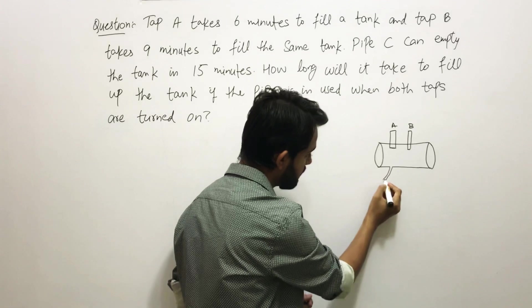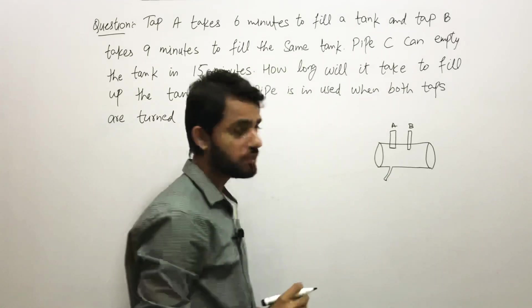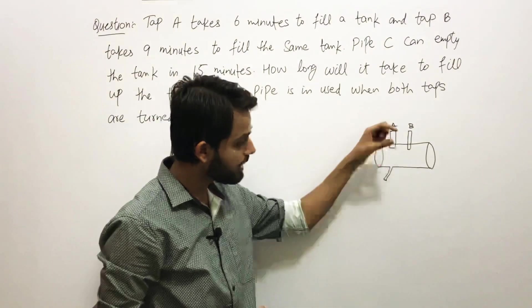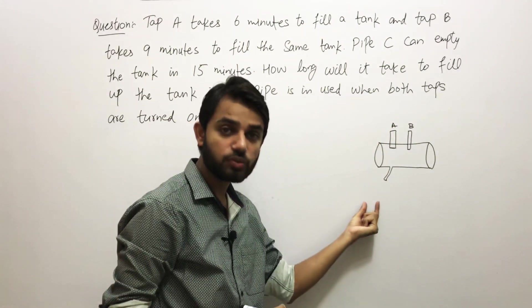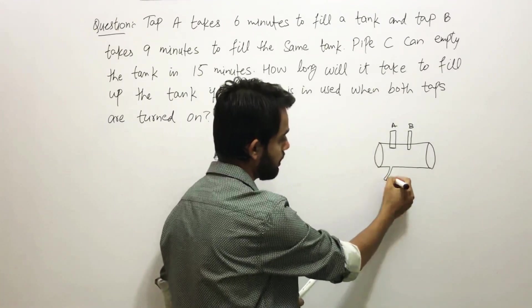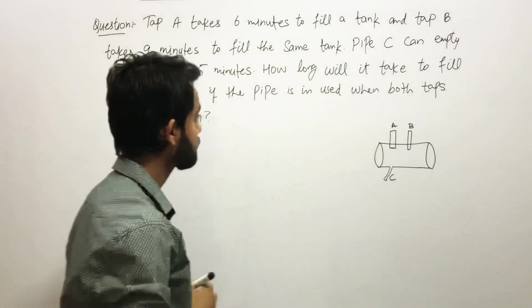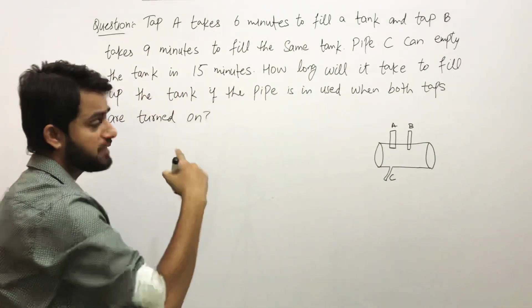There is a Pipe C over here which is emptying the tank. The question says while both the taps are open and Pipe C is also in use, we need to find in how much time this water tank will be filled.